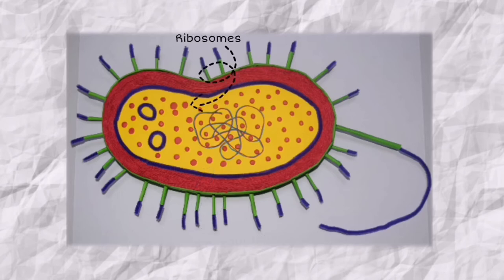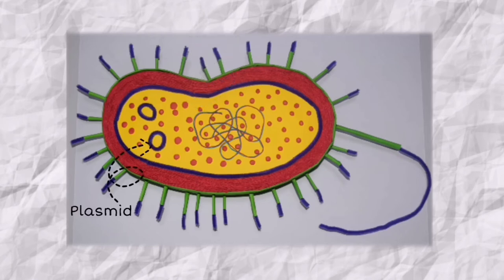The ribosomes. Microscopic structures found in all cells, including bacteria. The plasmid. A small, circular, double-stranded DNA molecule that is distinct from a cell's chromosomal DNA.